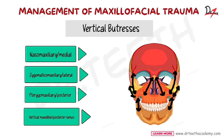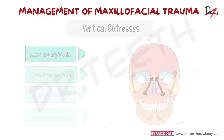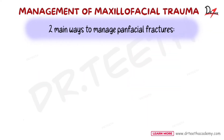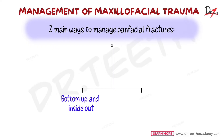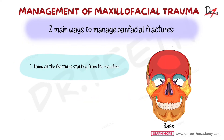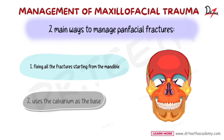So we have four horizontal buttresses and four vertical buttresses. There are two main ways to manage panfacial fractures: the bottom-up and inside-out approach, or the top-down and outside-in approach. The first method involves fixing all the fractures starting from the mandible going upwards, while the second uses the calvarium as a base and goes downward.